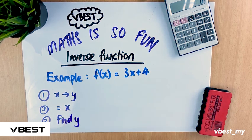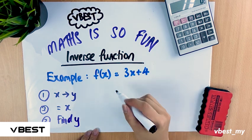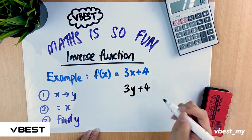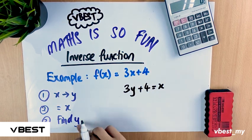Okay, now follow step by step. First, change the x into y, so it becomes 3y + 4. After that, make it equal to x and find the y.